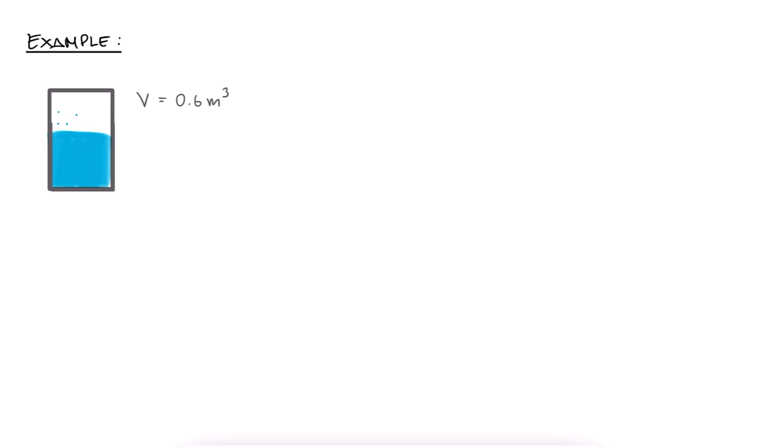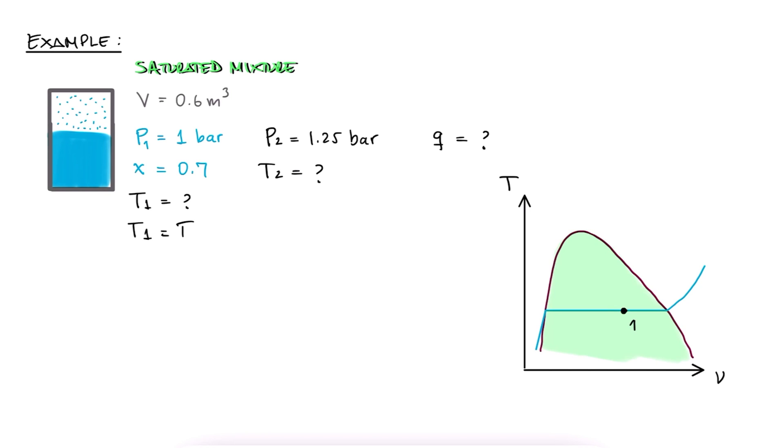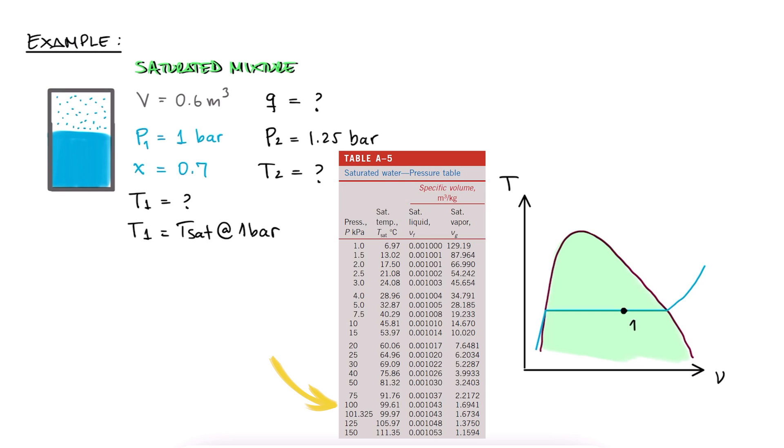A closed and rigid tank has a volume of 0.6 cubic meters and contains a two-phase mixture of liquid water and vapor at 1 bar, with a quality of 0.7. If we add heat so that the pressure rises to 1.25 bar, what are the initial temperature, the final temperature, and the specific heat transferred during the process? Since the problem is telling us that there's a two-phase mixture of liquid and vapor, or just from the fact that we have a quality value, we know that what we have in the tank is a saturated liquid vapor phase. Therefore, the temperature must be the saturation temperature for 1 bar. We'll look this up through any of the online tools or by going to the saturated table, and for 1 bar, we find that the saturation temperature is 99.61 degrees Celsius.